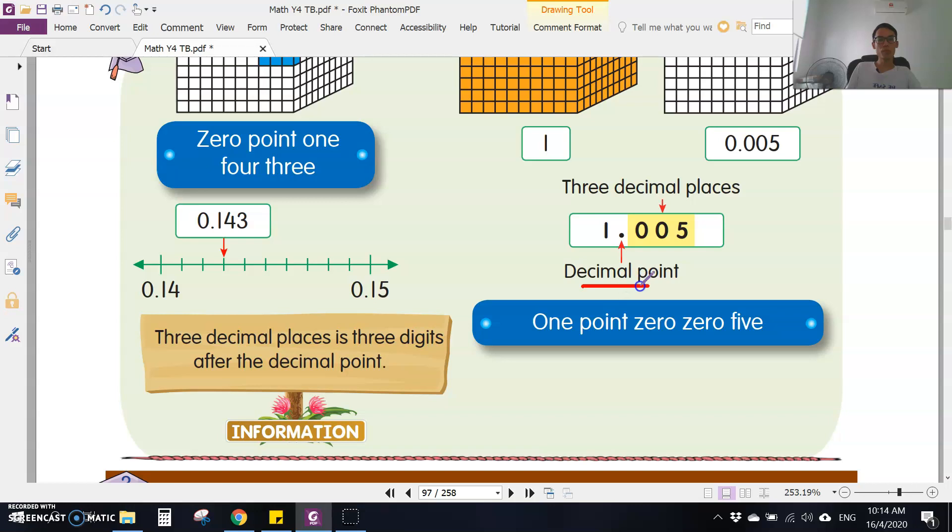The point we call the decimal point, titik perpuluhan, and the numbers behind we call decimal places. Three decimal places means there are three digits after the decimal point. If one decimal place, like 1.1, this is one decimal place, satu tempat perpuluhan. If I put 1.12, this is two decimal places. If I put 1.121, this is three decimal places, tiga tempat perpuluhan.